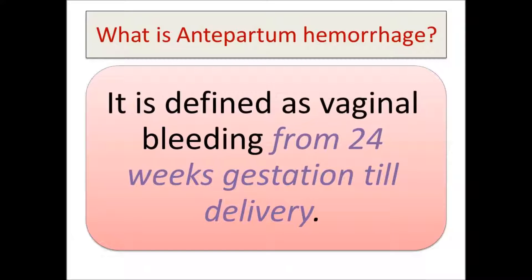Let's start with a definition. Antepartum hemorrhage is defined as any vaginal bleeding that occurs from 24 weeks of gestation until delivery of the baby. Any bleeding before delivery is considered antepartum hemorrhage, and it should be from 24 weeks of gestation, as at that point we have a viable baby. Before 24 weeks, vaginal bleeding is related to early problems of pregnancy like ectopic pregnancy and miscarriage.